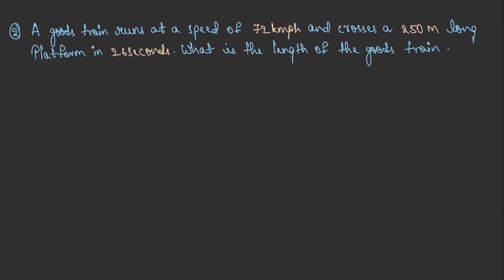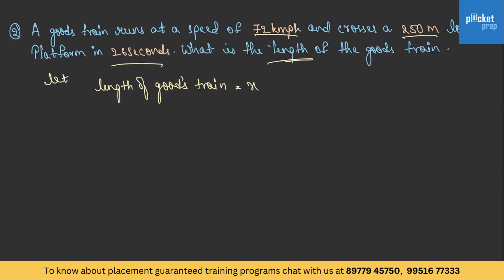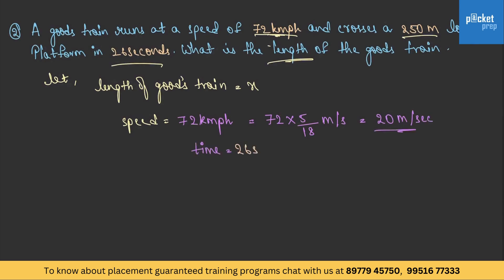Coming to the second question: A goods train runs at a speed of 72 km per hour and crosses a 250-meter long platform in 26 seconds. What is the length of the goods train? Let us assume the length of the goods train to be x. The speed is in km per hour, so let us convert it to meters per second. Time is given as 26 seconds.